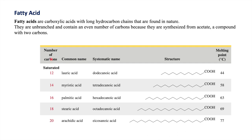All fatty acids are even-numbered. If you see their biosynthesis, it starts from acetate which is CH3COO⁻, a two-carbon unit. When two carbon units join with another two carbon units it gives four carbons, and further joining gives six carbons. Likewise, fatty acids bear an even number of carbons.